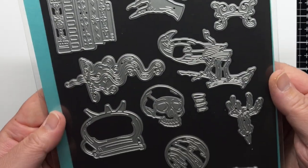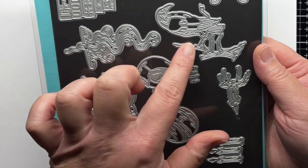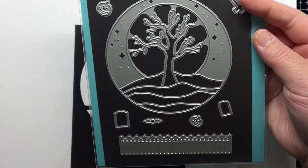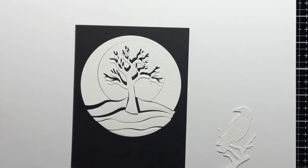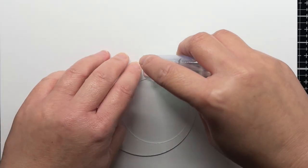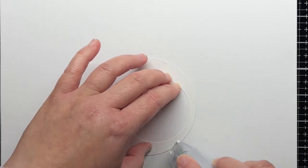First I've die cut the Raven from A Little Spooky and the Fright Night Circlescape from white cardstock. I add a little temporary adhesive to the back of the Fright Night Circlescape sky and adhere it to a piece of scrap paper.